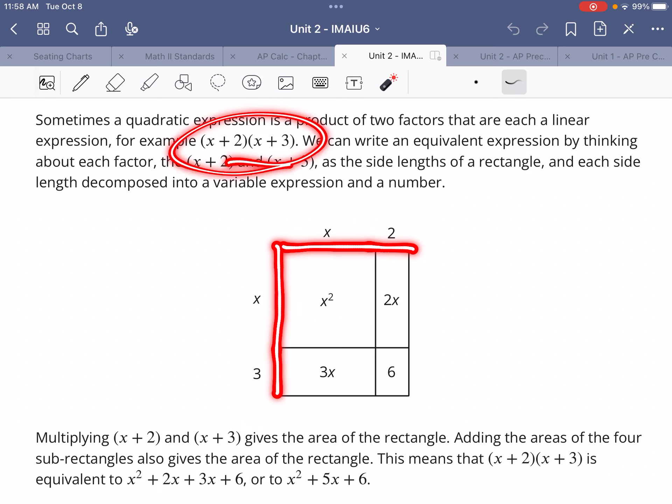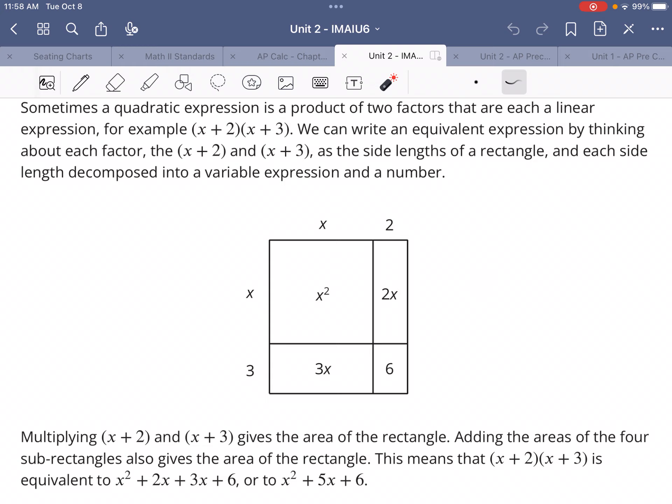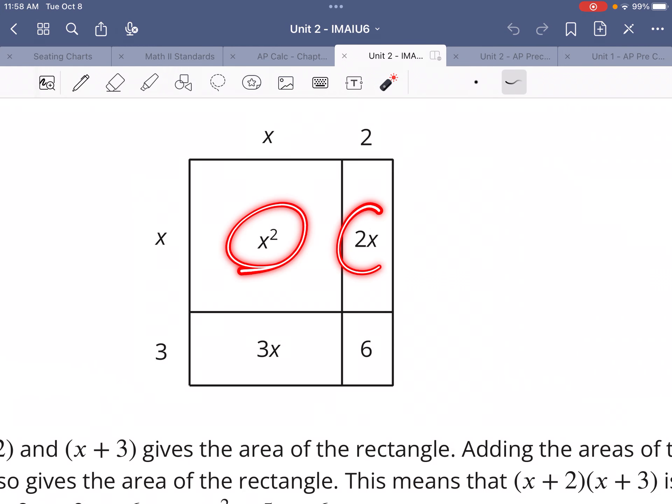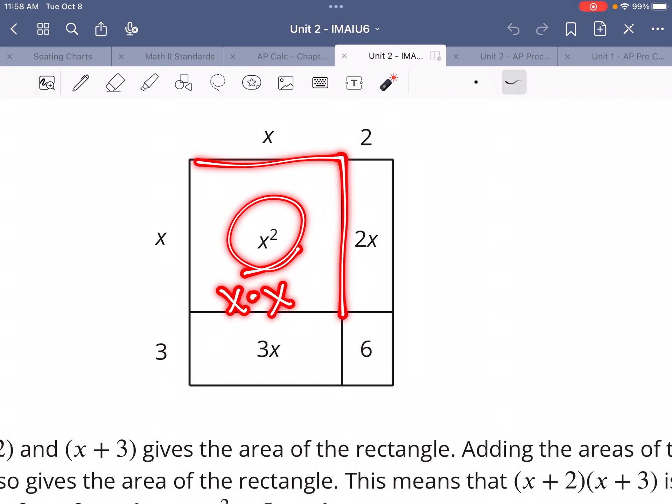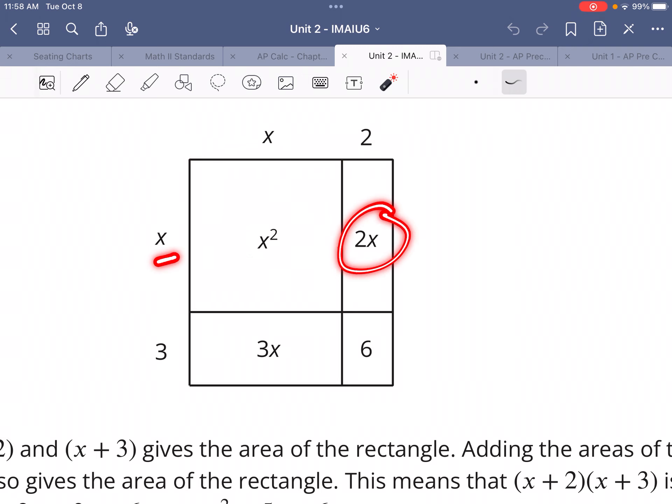So (x + 2) times (x + 3). What we can do then is look at each one of these rectangles here and find the area of each individual piece separately. If this is a box that's x by x, its area is x², because x times x is x to the second power. This right here, x times 2 is 2x. Three times x gives us 3x, and then 3 times 2 gives us 6.